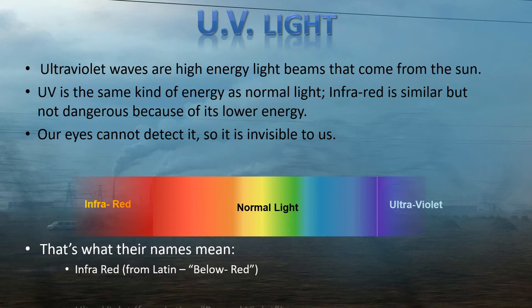Infra, by the way, means below in Latin, and ultra means beyond. So that's what the names of these lights mean. Infrared means below red, and ultraviolet means beyond violet.